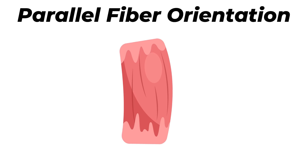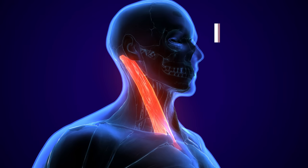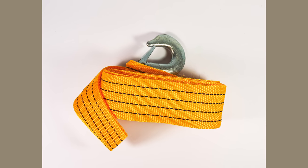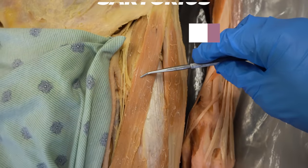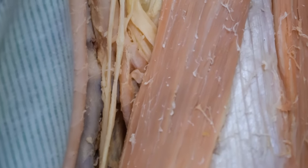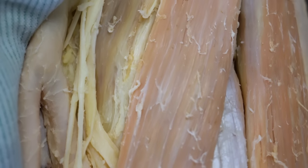Next we have parallel fiber orientations, where fascicles run in parallel to one another along the longitudinal axis of the muscle. The first type is the strap muscle — it looks like a strap or towing strap. The classic example is the sartorius, the longest skeletal muscle in the body, running from the anterior hip all the way down to the medial knee. It produces a lot of range of motion — swinging the hip and knee — and is a very long, very mobile muscle.